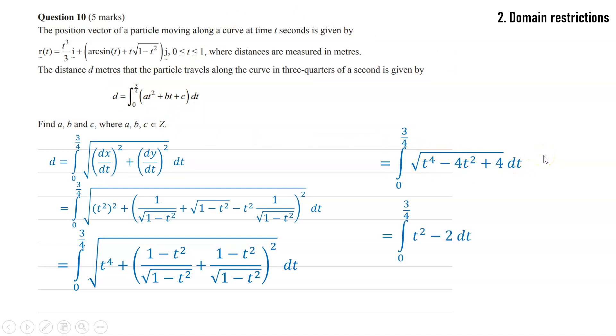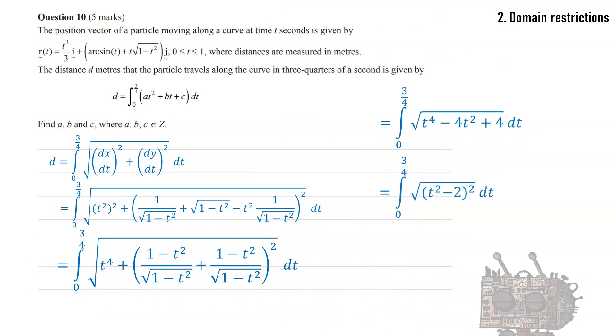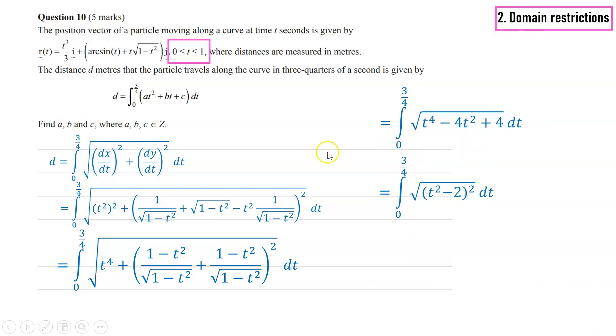So what they did was, well, I know that's the square of t² minus 2. So then I can match up a, b, and c and get my answer. So what's the domain restriction? t is between 0 and 1. And if we look at the expression in the bracket, that's always going to be negative.